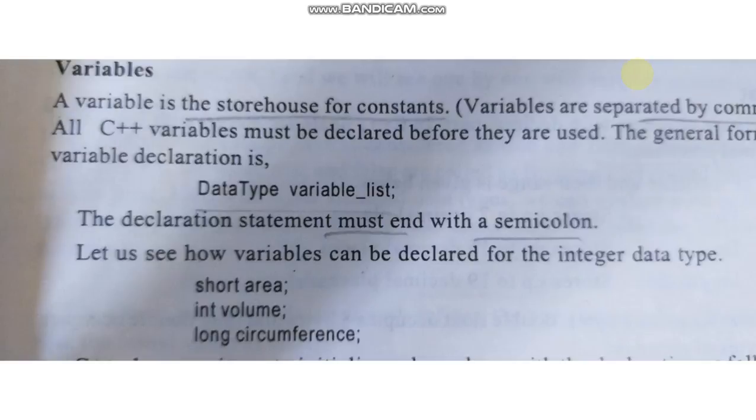And next is about variable. Variable, we can say it is a storehouse for constants. The general form of variable declaration is data type and variable list. And note that the declaration statement must end with a semicolon. The examples are short area, int volume, long circumference. All end with a semicolon.